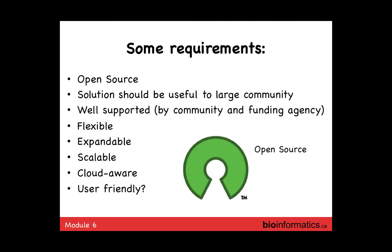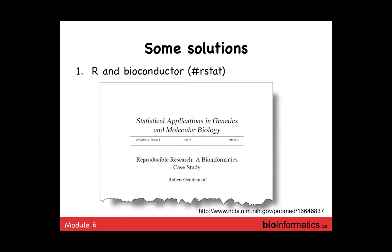The advantage of the open source community is that you have many more eyes on the source code and on what the code is actually doing — it's not a black box, which is a concern. It allows people to share, provide different versions, and so forth. A great example of a community using a large set of open source tools — already discussed in this workshop — is R and Bioconductor. The usual Twitter tag for R is 'rstats' for statistics.